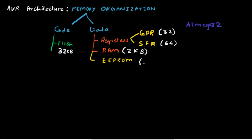On the ATmega32 we have 2 kilobytes of RAM and the EEPROM is 1 kilobyte. In terms of memory, this is not a great amount compared to modern controllers, but it is helpful in a whole lot of applications — which is why you're here learning to build something with these controllers.